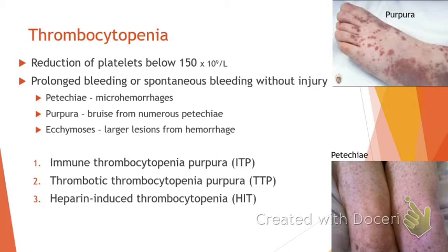Let's talk about thrombocytopenia. Thrombocytes are platelets - just like erythrocytes are red blood cells. Thrombocytopenia is a reduction of platelets below 150. Anything lower than that means you don't have a lot of circulating platelets, and when that happens, you get a lot of micro-bleeding because platelets are our first line of defense. Most blood vessels are only about two cells thick - things break down all the time, and platelets plug the area until the repair team can get there.